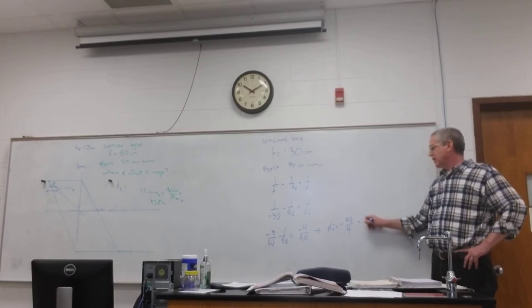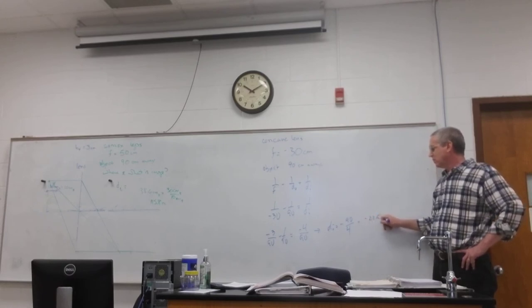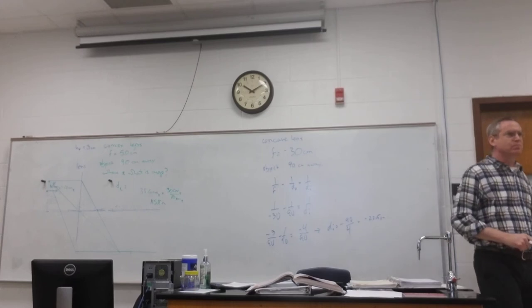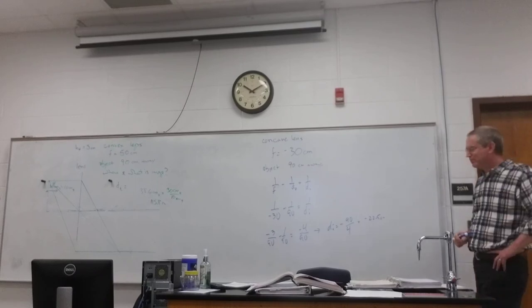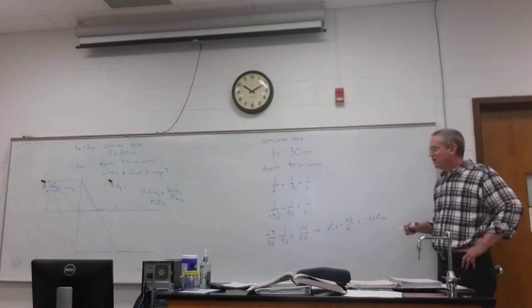And so d sub i would be negative 90 over 4. I'm getting negative 22.5. That's right. Believe in yourself. And even if you're wrong, save the confidence.